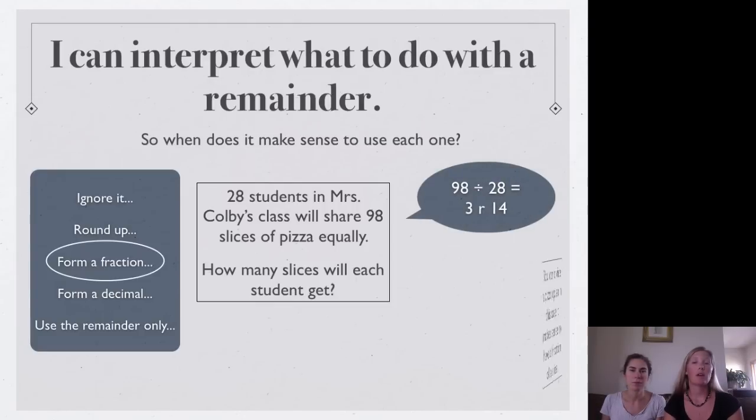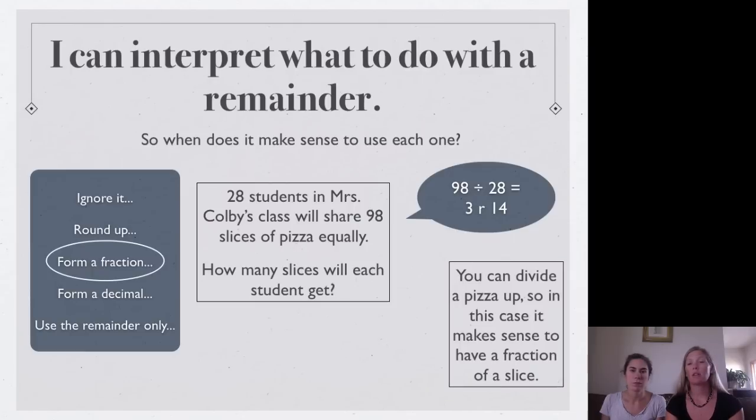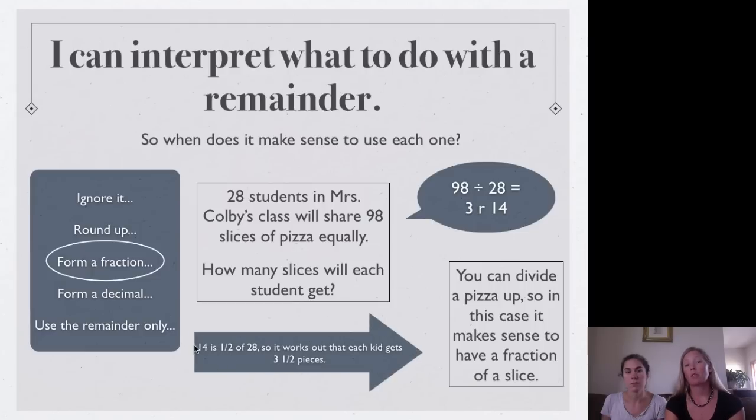So our 98 divided into 28 people is three. I got jumped ahead a little bit. With a remainder of 14. So you wouldn't say each person gets three with a remainder of 14 pieces. That doesn't make sense. That makes no sense. So if you think about it though, there's 14 pieces left and there's 28 people. So that is, 14 28s is a half. So, a 14 is one half of 28. So each person gets three and a half pieces of pizza. That makes more sense. That makes more sense. And this one to me is the most difficult one to be able to turn the remainder into something that makes sense. But this is the case where you would use a fraction.